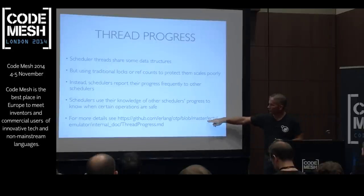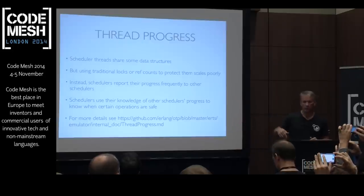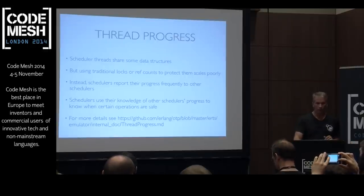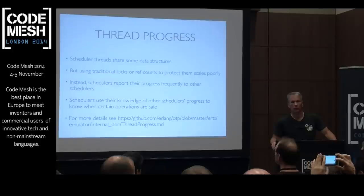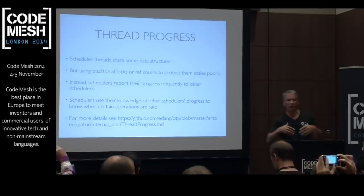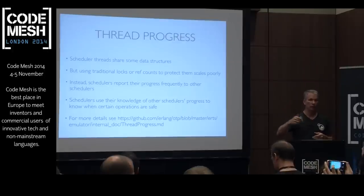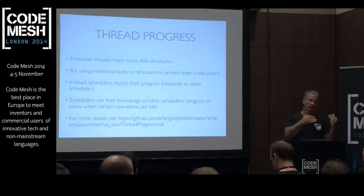In the OTP repository on GitHub there's a bunch of papers under internal docs under the ERTS runtime system directory. One of them is thread progress, but there's a lot of really good detailed information if you're interested in how the virtual machine works. A question came up: schedulers and threads are basically synonymous — it's a thread running all the emulator code. It is multiple threads cooperating to report progress to each other so they can know where other schedulers are and act accordingly.